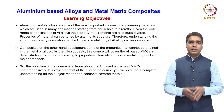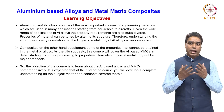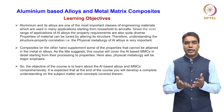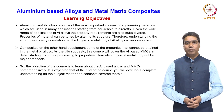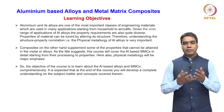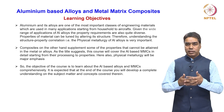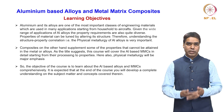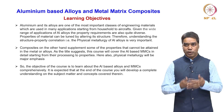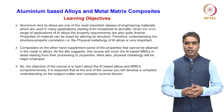Composites supplement some of the properties which cannot be attained in the metal and alloys. For example, the wear resistance and hardness of aluminium can be improved by making a composite out of it. As the title itself suggests, this course will also cover the aluminium-based metal matrix composite in detail, starting from their processing to properties, with a major emphasis on the physical metallurgy aspect.